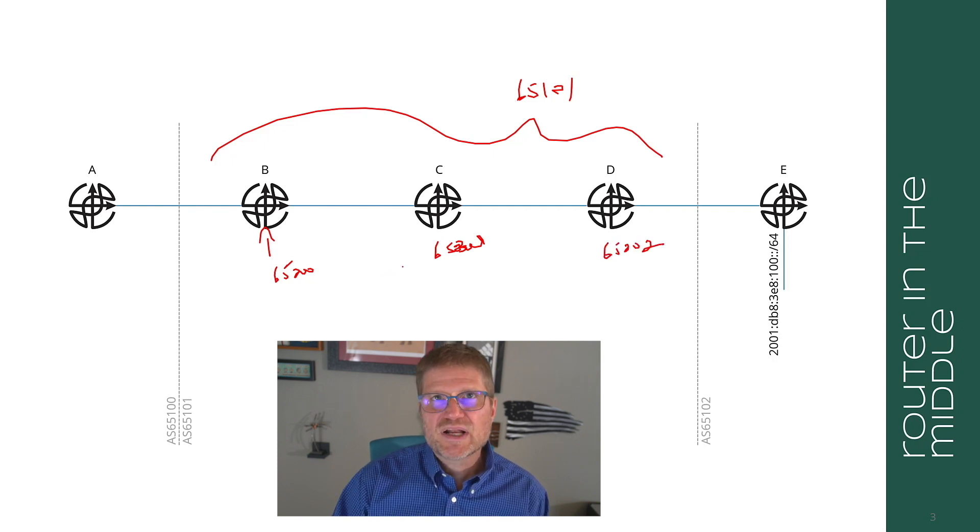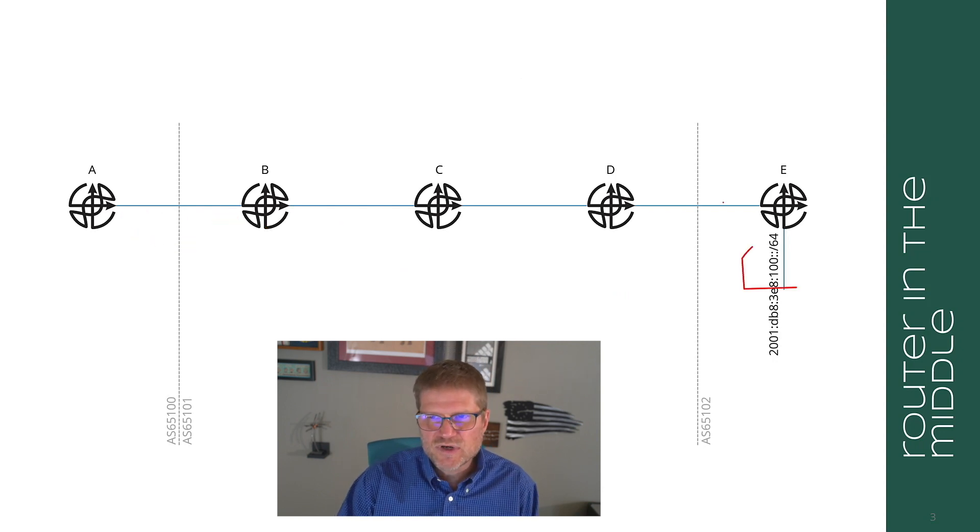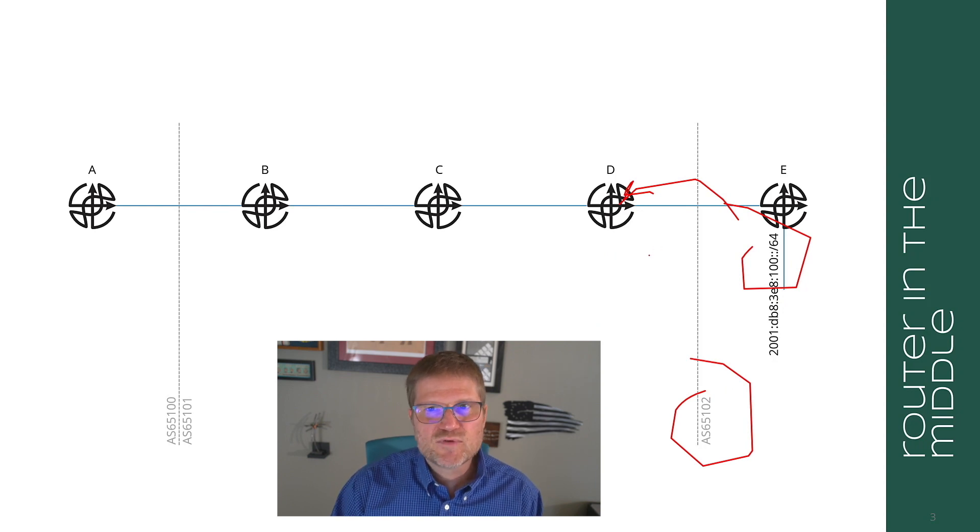So what happens here is that the route is advertised. Let's go from the other direction: 100::/64. The route is advertised. It picks up AS 65102 in the AS path. When it hits this D router, it's going to pick up a sub AS path. It's going to pick up a secondary AS path and this AS path is going to be added when it's advertised from D to C.